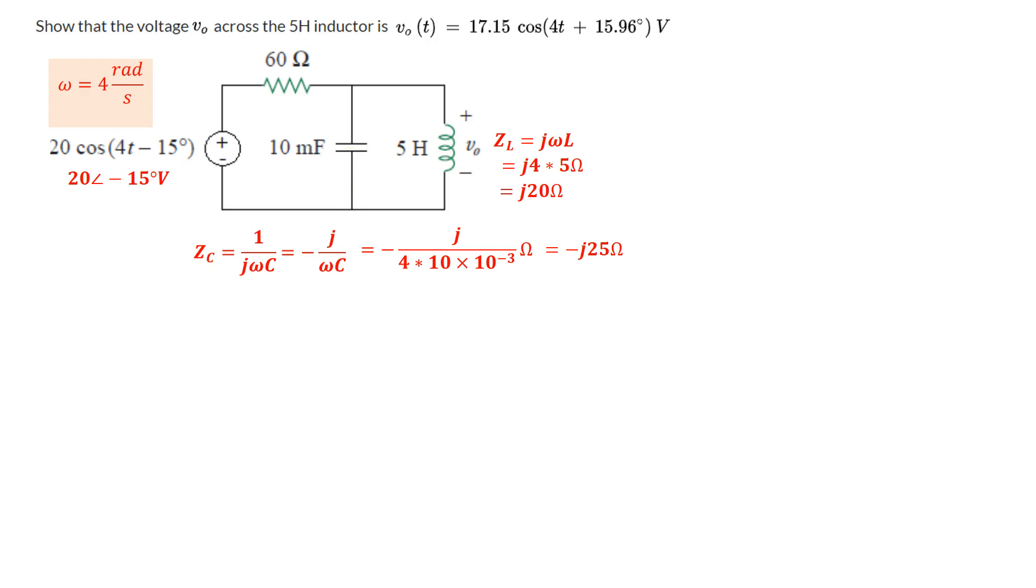So now we've converted every single component there into their phasor representation and their impedances. So let's redraw that circuit real quick. So now when we look at the circuit, a few things are abundantly clear.